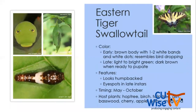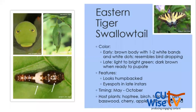The eastern tiger swallowtail is another caterpillar that drastically changes appearance across instars — our first example of a caterpillar that resembles a bird dropping. In early instars, it has a brown body with one or two white bands along the back and white dots. Later, the caterpillar is green, turning dark brown when ready to pupate. In all instars, the caterpillar looks humpbacked, and in later instars it has iconic eye spots. You can find them May through October on many different tree species such as birch, basswood, and magnolia.